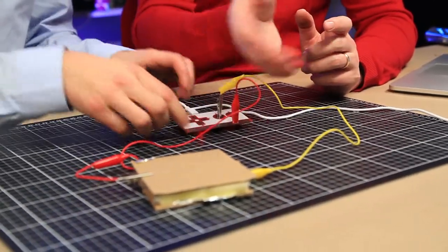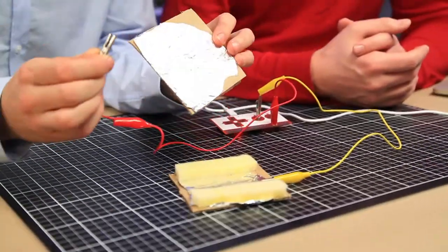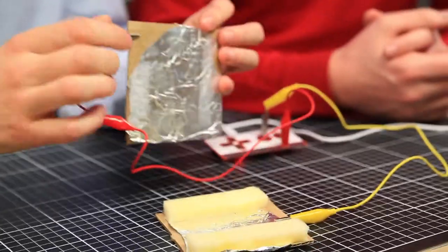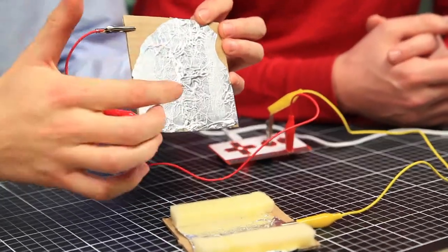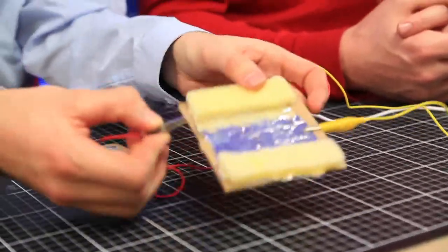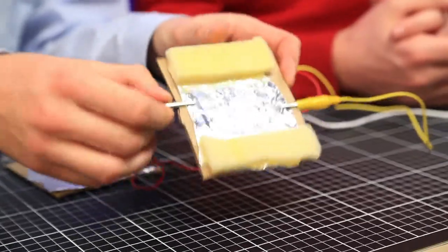So what could be wrong with the button itself? Well, for example, you could have connected the crocodile clamp onto the cardboard instead of onto the metal, and then it doesn't make any contact. Or you could have put the clamp, both of the clamps, on the same piece of metal, and then you always have a closed circuit, so you're always pressing the button.